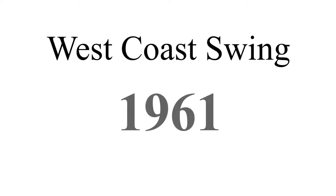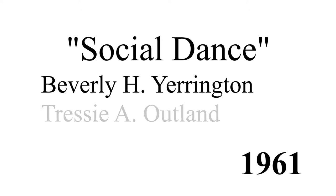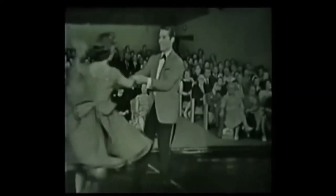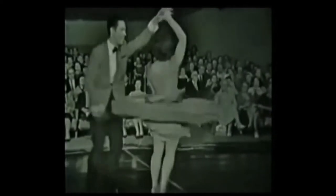According to Wikipedia, the term West Coast Swing appeared for the first time around 1961 in a dance book entitled Social Dance by Beverly H. Yarrington and Tressie A. Outland. And later, the ballroom dancer Skippy Blair used it in an ad for a dance event in 1962. But it wasn't until the mid-1960s when everyone in the dance world recognized and used the term West Coast Swing to talk about this awesome style of dancing.